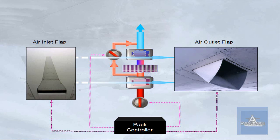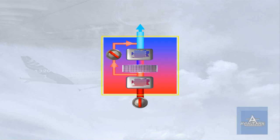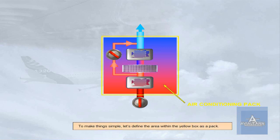Note: the ram air inlet flaps close during take-off and landing to avoid ingestion of foreign matter. To make things simpler, let's define the area within the yellow box as a pack.